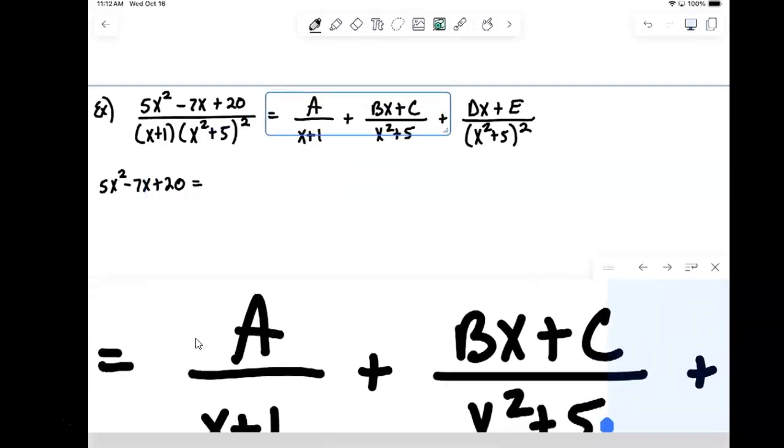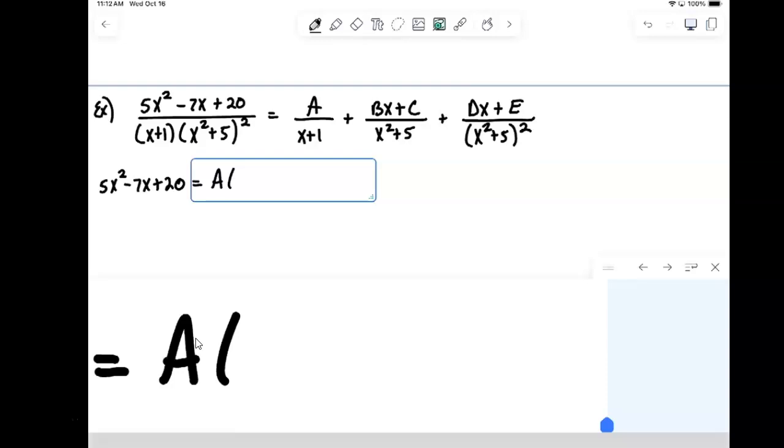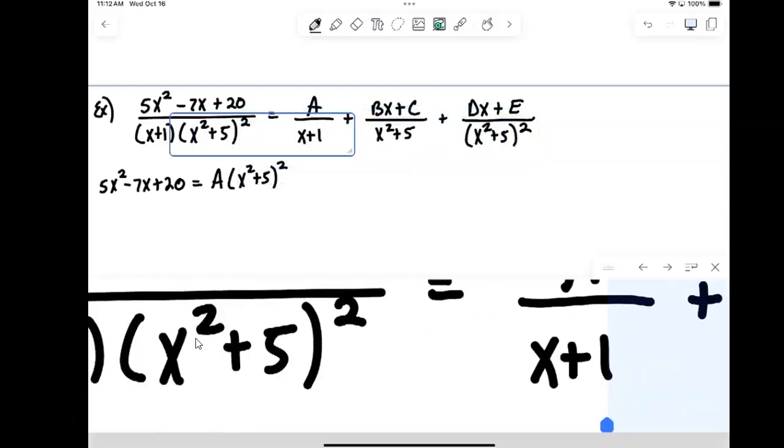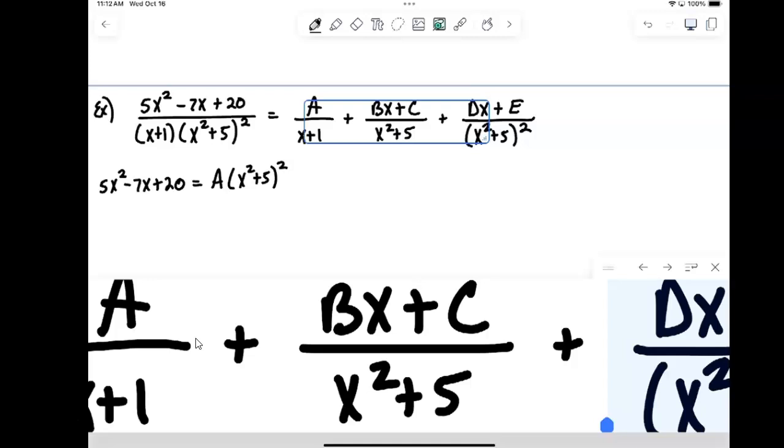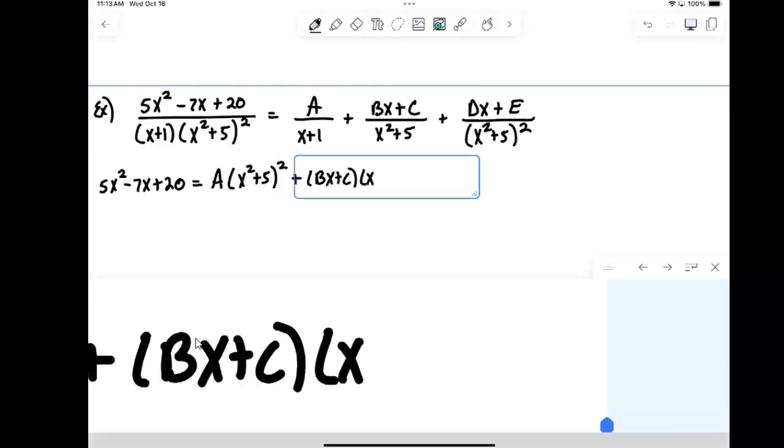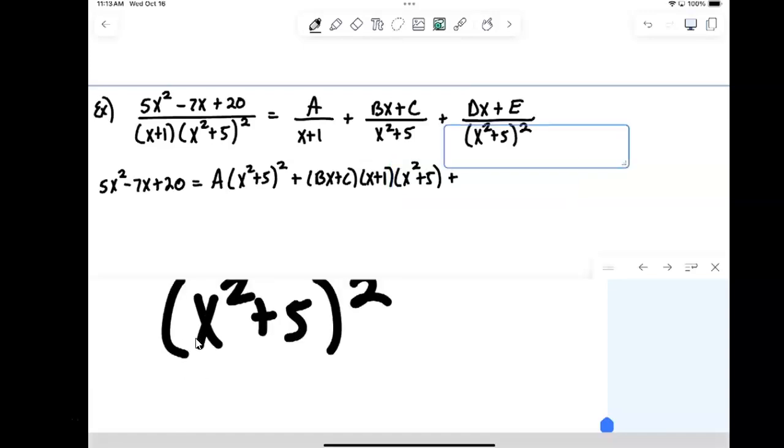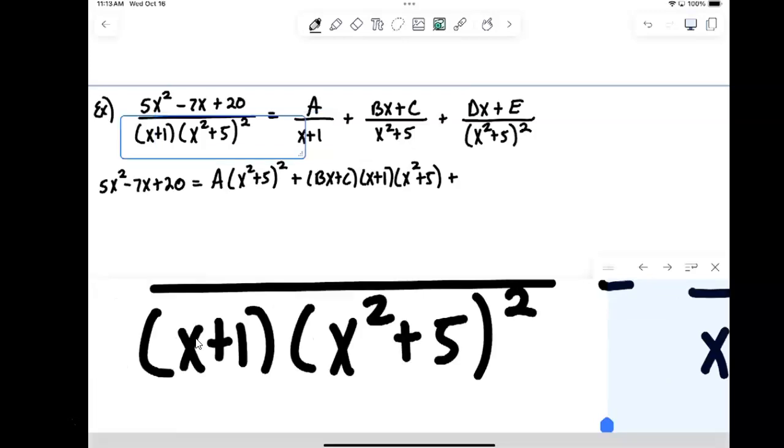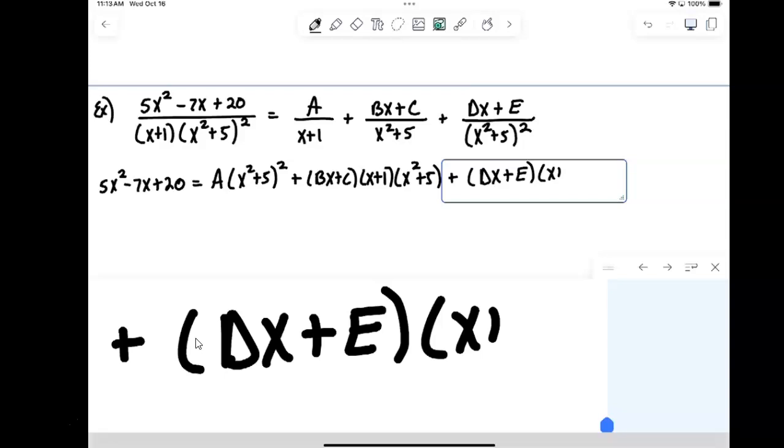So when we multiply by the common denominator, the x plus 1 will cancel. And so a is going to be joined by x squared plus 5 quantity squared. Second fraction, one of the x squared plus 5s will cancel out. We'll be left with an x plus 1 and an x squared plus 5 to go with the bx plus c. And then finally, the last fraction, the x squared plus 5 squared will completely cancel out. That leaves us with an x plus 1 to go with our numerator dx plus e times x plus 1.